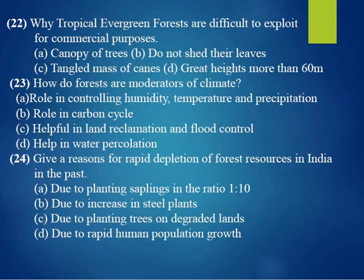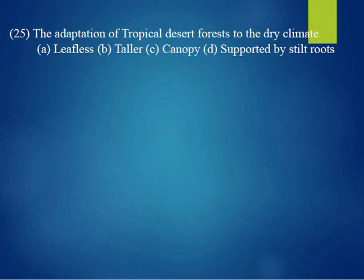Twenty-third question: how do forests moderate climate? A is the correct answer — forests play a role in controlling humidity, temperature, and precipitation. Twenty-fourth question: give a reason for the rapid depletion of forest resources in India in the past. The answer is D, due to rapid human population growth. Twenty-fifth question: the adaptation of tropical desert plants to the dry climate — the correct answer is that they are leafless, which is an adaptation, and they also grow long roots in search of water.